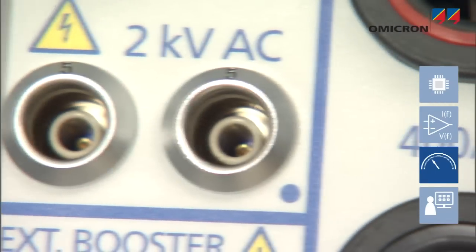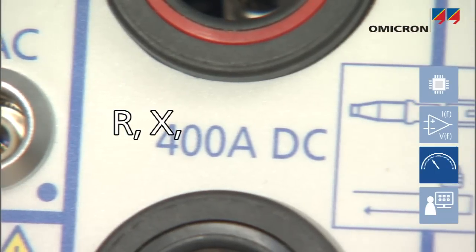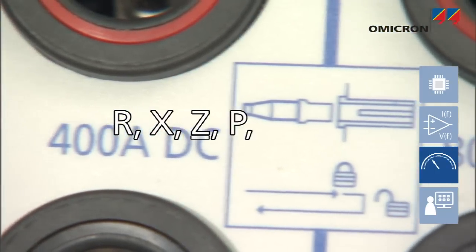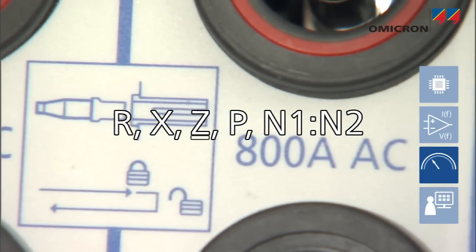Measuring input and output values in amplitude and phase allows one to determine resistance, reactance, impedance, power values, and electrical parameters such as ratio, polarity, or burden.